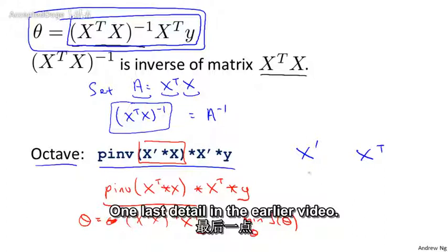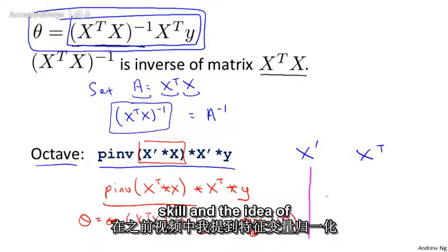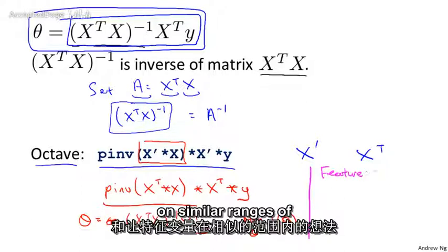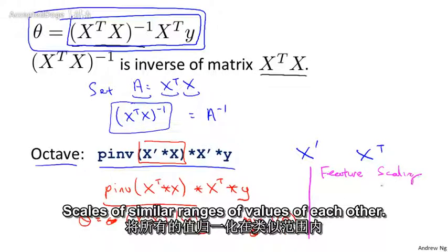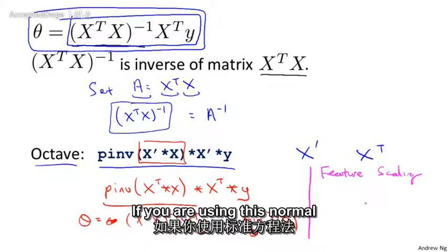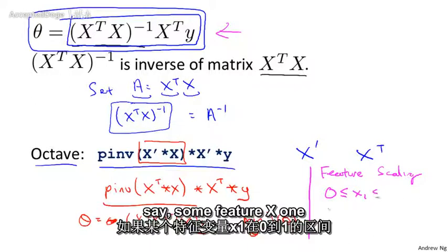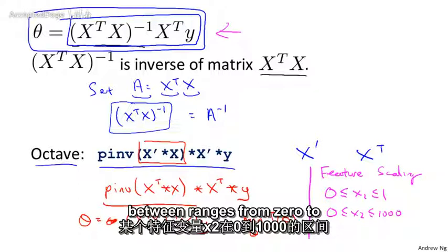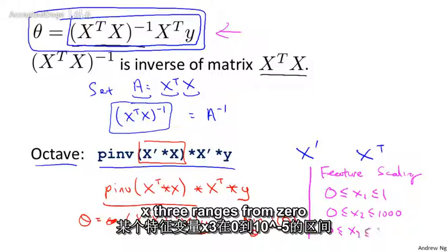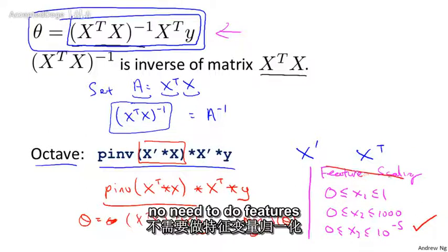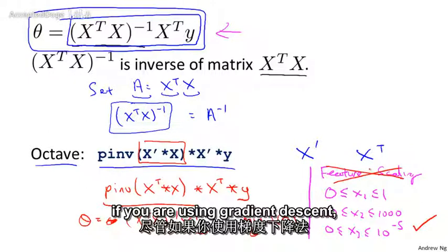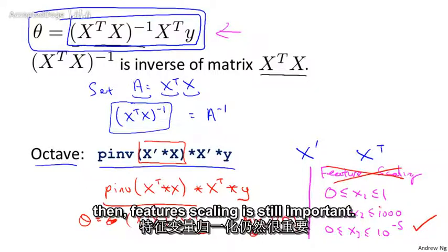One last detail: in an earlier video I talked about feature scaling — getting features to be on similar ranges of values. If you're using the normal equation method, feature scaling isn't actually necessary. It's fine if feature x1 ranges from 0 to 1, x2 ranges from 0 to 1000, and x3 ranges from 0 to 10 to the minus 5. With the normal equation this is okay — no need to do feature scaling, though if you were using gradient descent, feature scaling is still important.